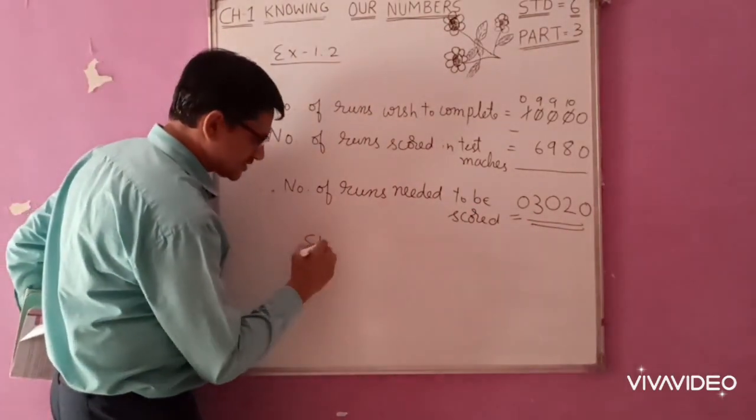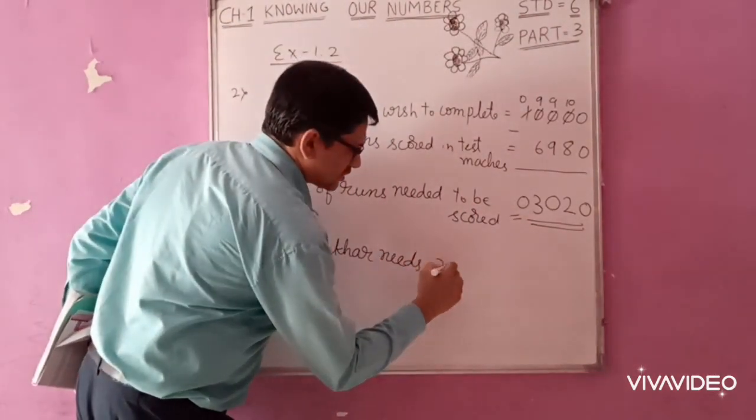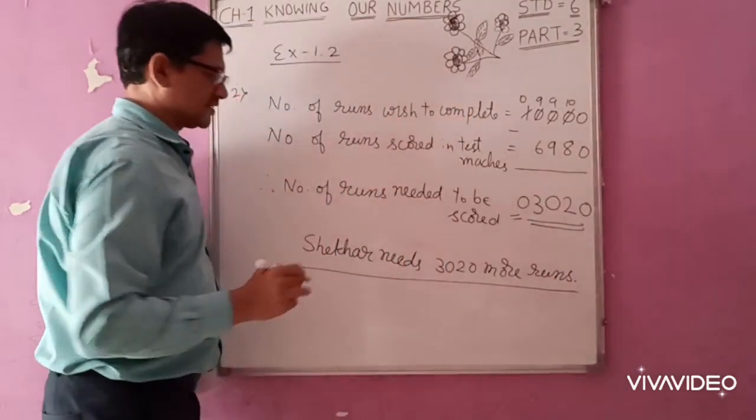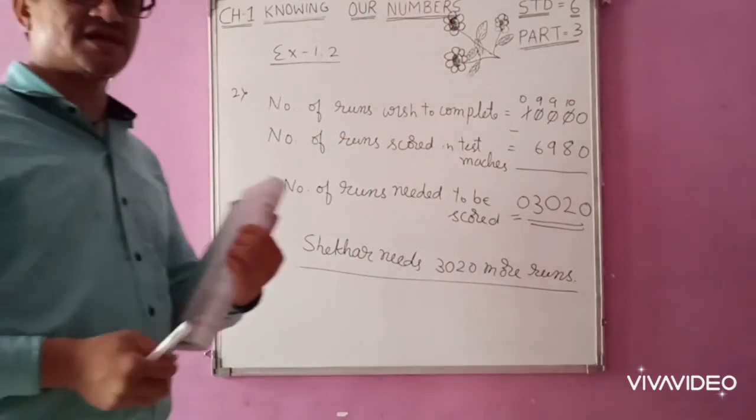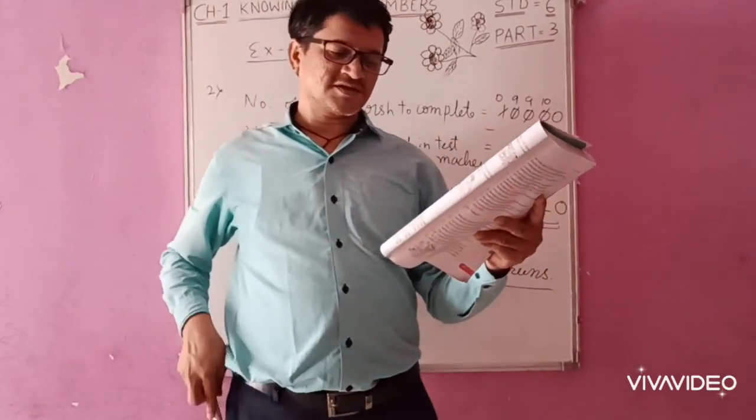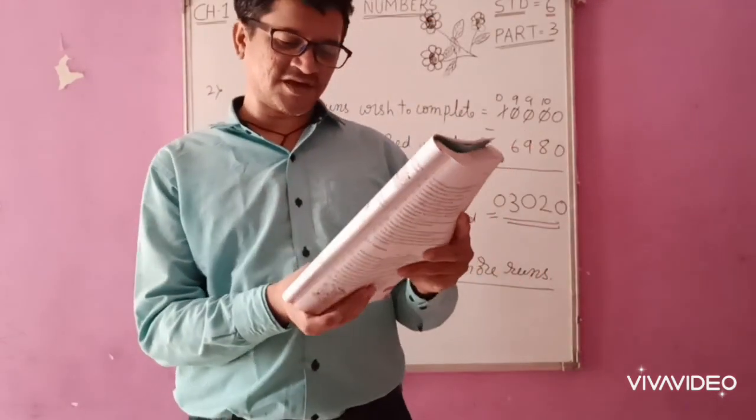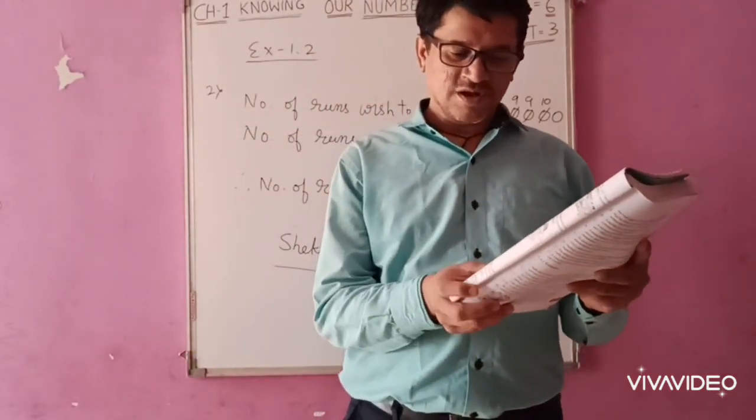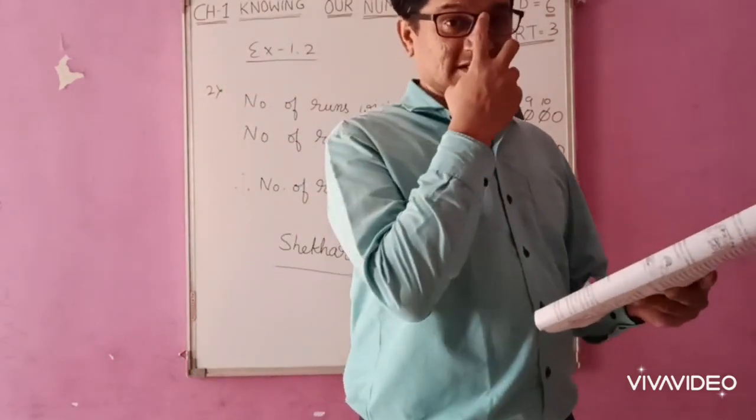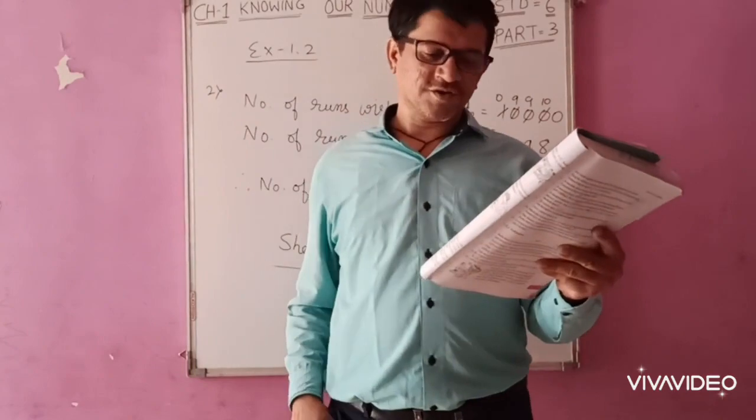Sachin needs 3,020 more runs. So here we are going to be completing the third one. In an election, a successful candidate registered 5,77,500 votes and his nearest rival secured 3,48,700 votes. By what margin did the successful candidate win the election? So here, the same problem that is subtraction. So you will be subtracting in the third problem. So it will be a work for you to complete the third problem.